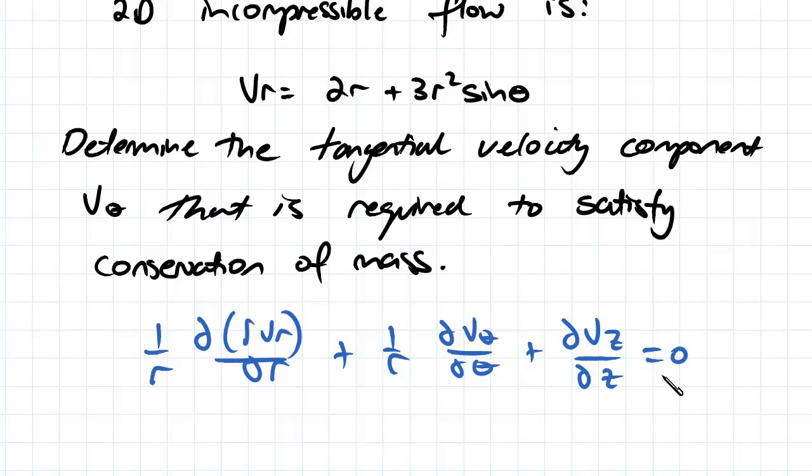Now since we're dealing with a 2D incompressible flow, we know that this term here is going to be equal to 0. So we're just going to be looking at these two terms here.